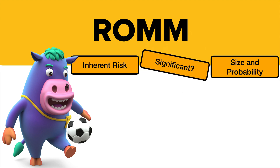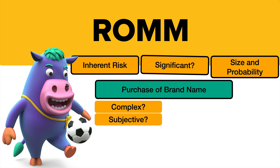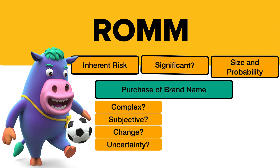Compare that to purchasing a brand name — a big intangible. Is it complex? More complex than buying land, though the actual transaction probably isn't that complex. Is it subjective? Definitely, because you have to decide how long to amortize it over, and a brand name is very unique, so that's really difficult. Is it subject to change and uncertainty? Yes, there's uncertainty over depreciation. And susceptibility? Probably yes — if a company has purchased a brand name, they want that brand to do really well, so they might be susceptible to changing profitability measures and that sort of thing.